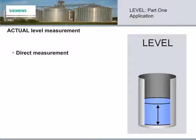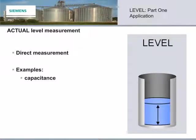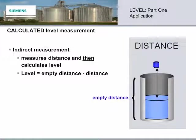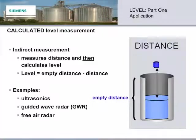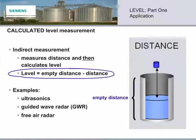Actual level measurement directly measures the material for which we want to know the level. One of the few technologies that measures actual level is capacitance. Calculated measurement indirectly measures level by calculating conditional factors. Technologies like ultrasonics, guided wave radar, and free air radar measure distance to the surface, not the level itself. But from that information, they can calculate level by subtracting that distance from the total empty distance of the container.